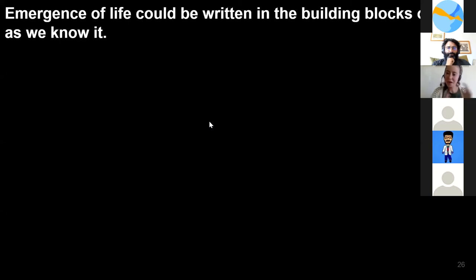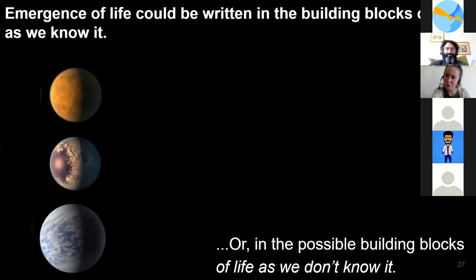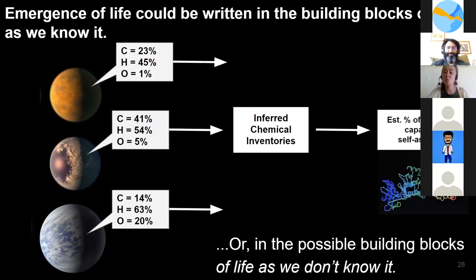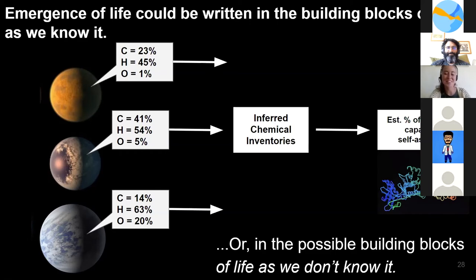To conclude, the way I like to think about this project is that the emergence of life could well be embedded in the building blocks of life as we know it — but even more exciting, it could be embedded in the building blocks of life as we don't know it. As we gather more information about other worlds in our solar system and beyond, such as chemical composition, we can begin to build chemical inventories much like we did for the early earth. Through running this pipeline, we can estimate what percentage of monomers in these worlds could form self-assembling structures and might be a basis for life. I find that very exciting for our future.